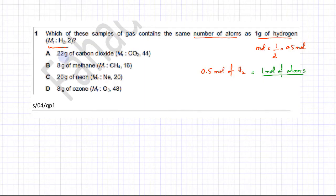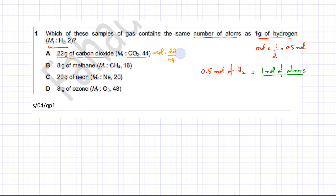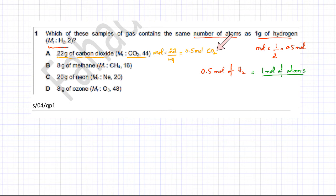Looking at option A: 22 grams of carbon dioxide. Moles of CO₂ = 22 divided by the molar mass of 44, which equals 0.5 moles. But remember, CO₂ has three atoms per molecule — one carbon and two oxygen. So 0.5 moles of CO₂ gives 1.5 moles of atoms. This cannot be the correct option.